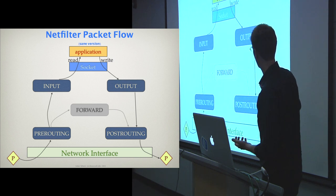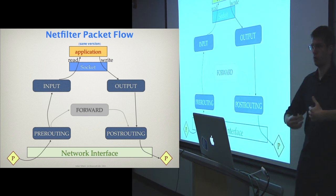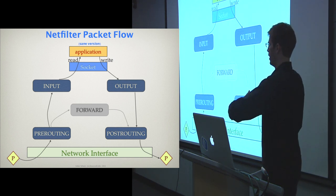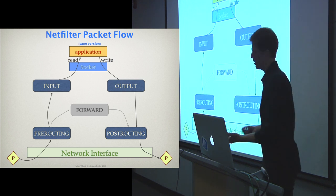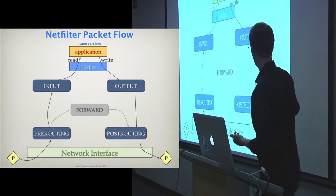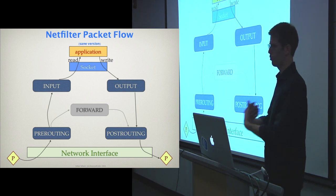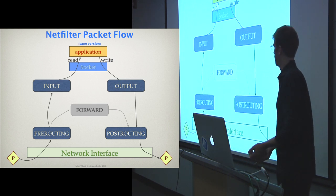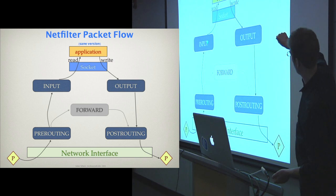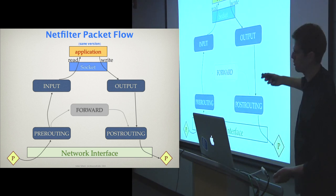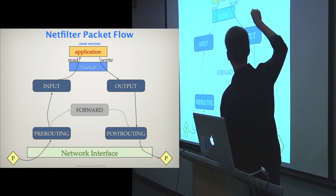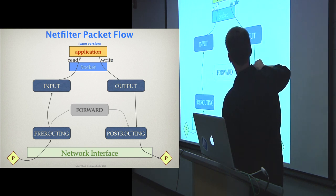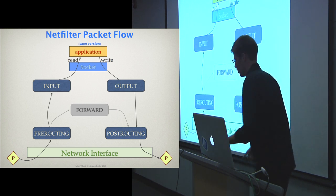If the packet is for the system itself — say I'm running a web server and receive a packet to port 80 — it goes up through the input chain to the socket where the application reads it. If the packet is not for the system, it's routed through the forward chain, then to post-routing where post-processing is done, and sent back out on the wire. If the web server writes a response, the packet goes through the socket, through the output chain, through routing, and onto the wire.